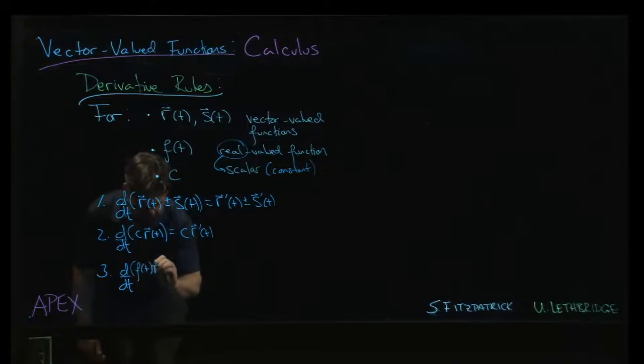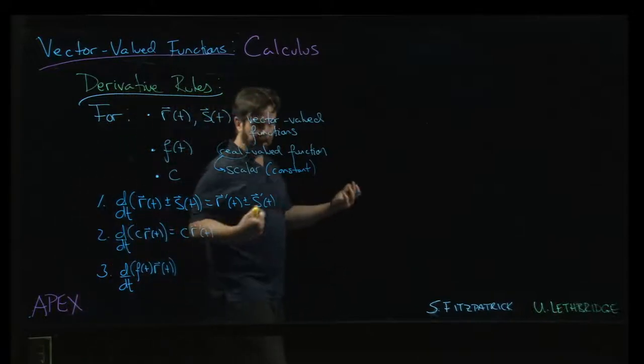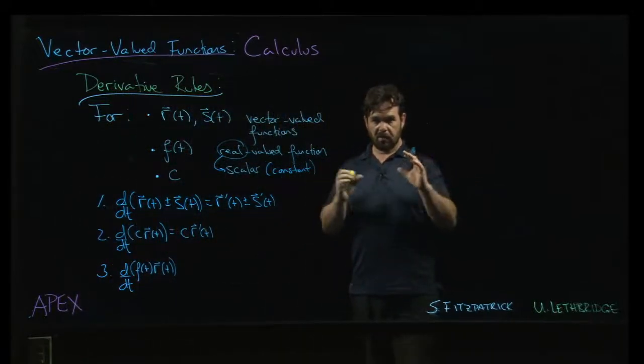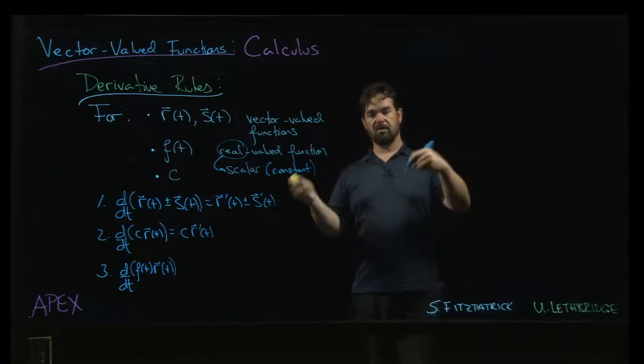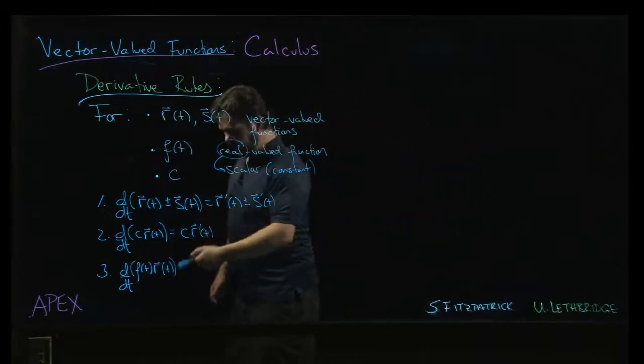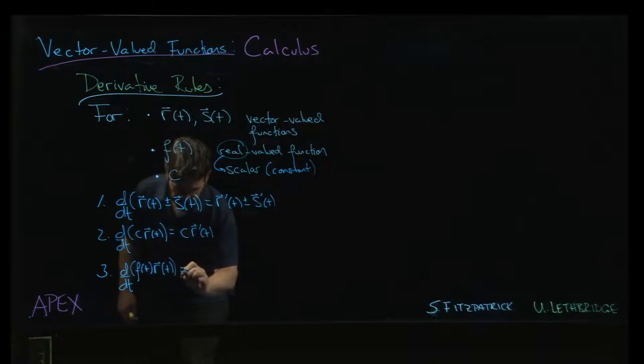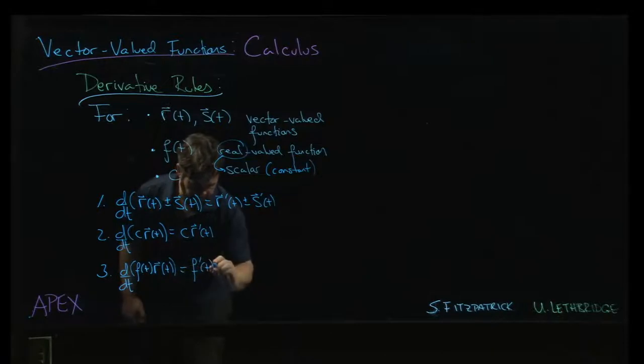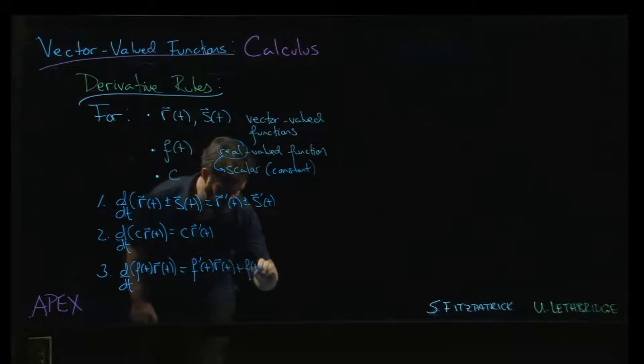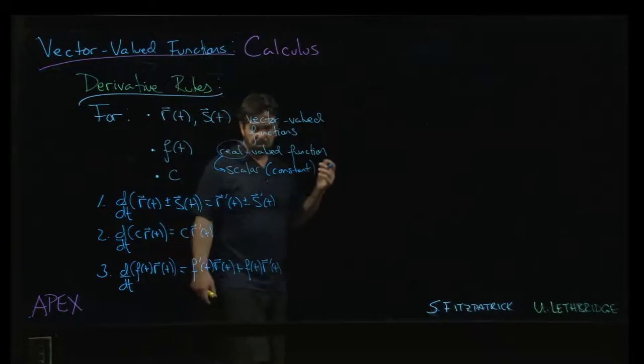f of t times r of t. And so the scalar multiplication is what you would expect. Each of the components in r of t gets multiplied by f of t. And since we take the derivative term by term, you have the regular product rule on each term, and you can kind of work out the details. In fact, maybe we will work out those details that you're going to get. Well, derivative of f times r plus f times the derivative of r, just as you probably expect.